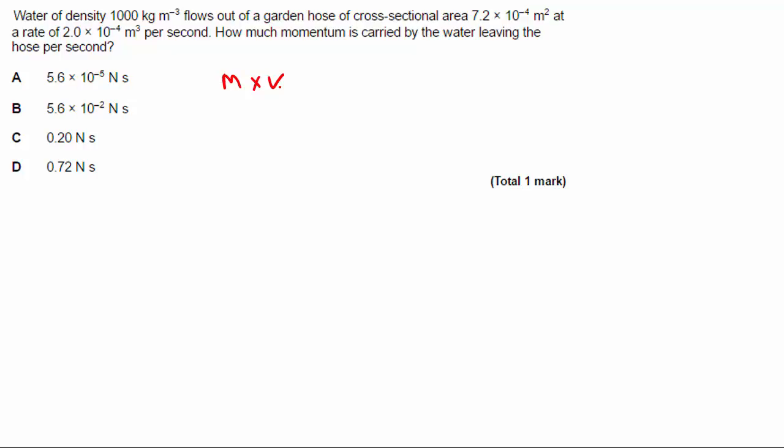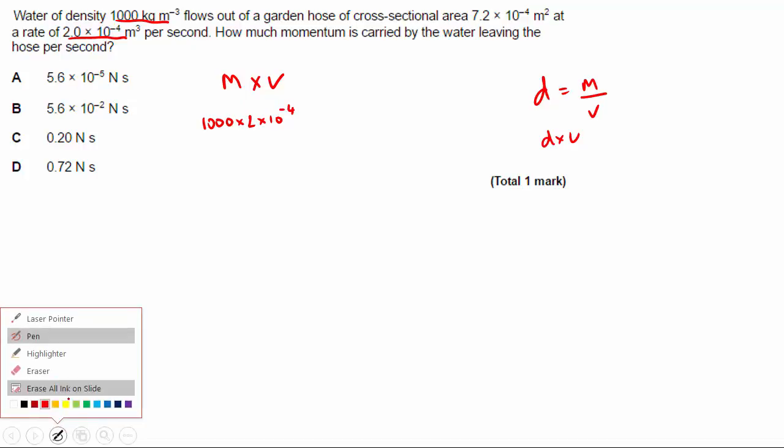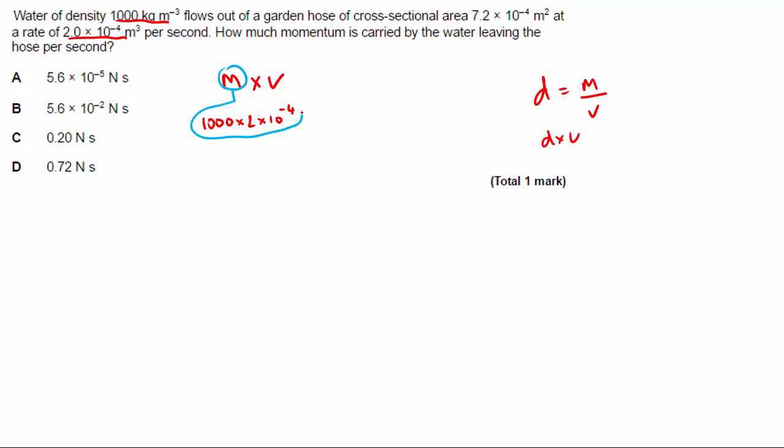And I can get the mass because density equals mass divided by volume. So mass will be density times volume. So I've got the density and I have the volume of water coming out per second. So that's the mass of water coming out per second. So 1,000 times 2 times 10 to the minus 4 is the mass. So that mass is that.